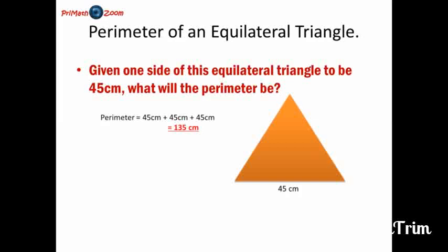Yes, we could add 45 for one side, 45 for another side, and 45 for the third side to get the perimeter. Because remember, perimeter is adding up all the sides. And when we total all these sides, we get 135 cm.